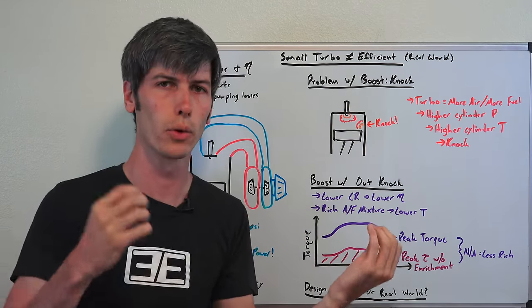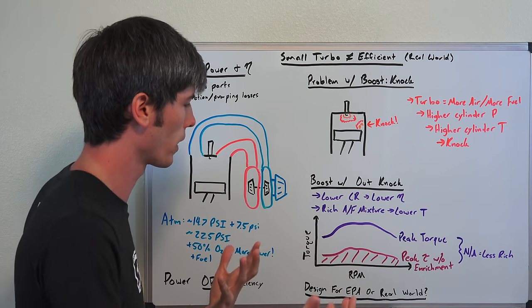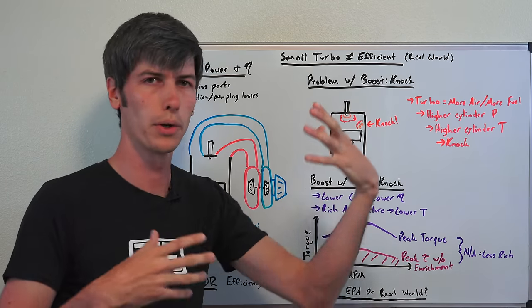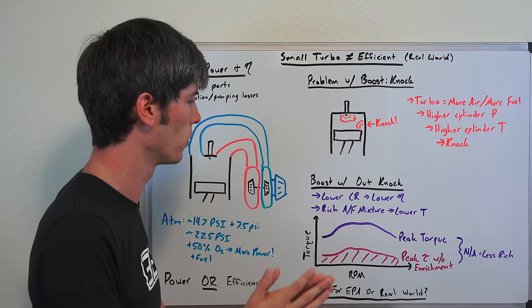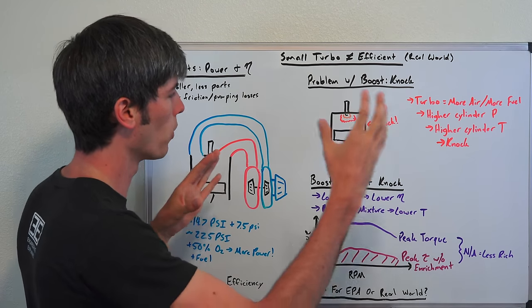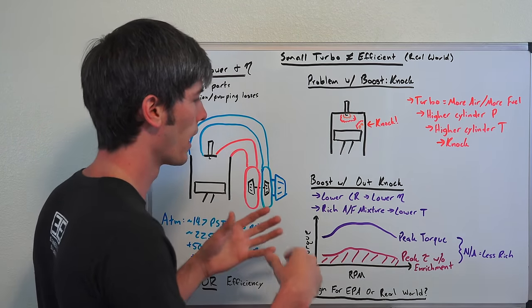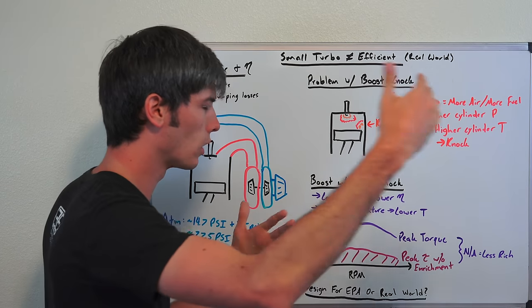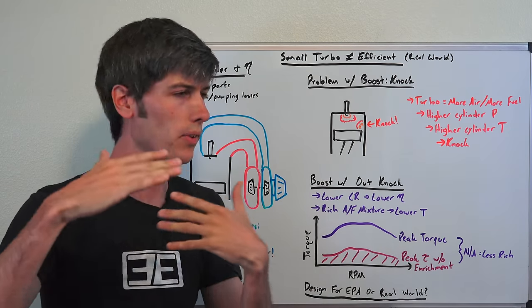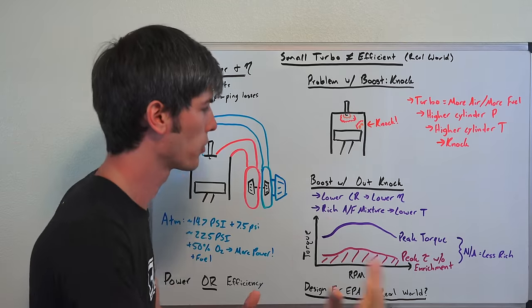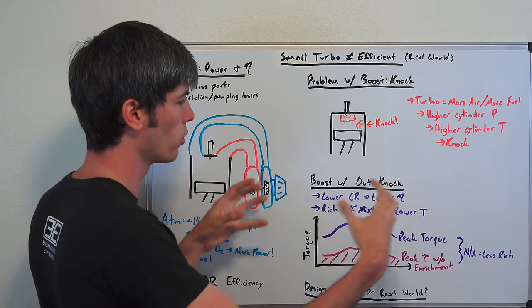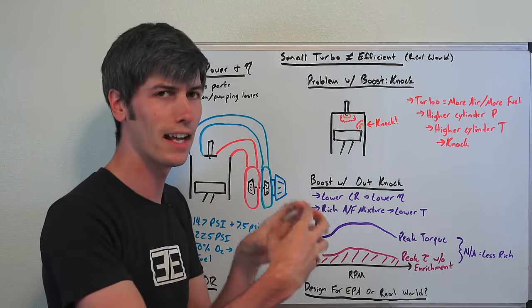So ideally you're running somewhere around 14.7 to 1 air to fuel ratio, that's the ideal amount where you're going to burn all the oxygen, you're going to burn all the fuel, it's going to work out great. But when you're running at high boost levels and high throttle, you're going to lower that from 14.7 to perhaps 11 to 1, perhaps 12 to 1, in order to bring the temperature in that cylinder down.